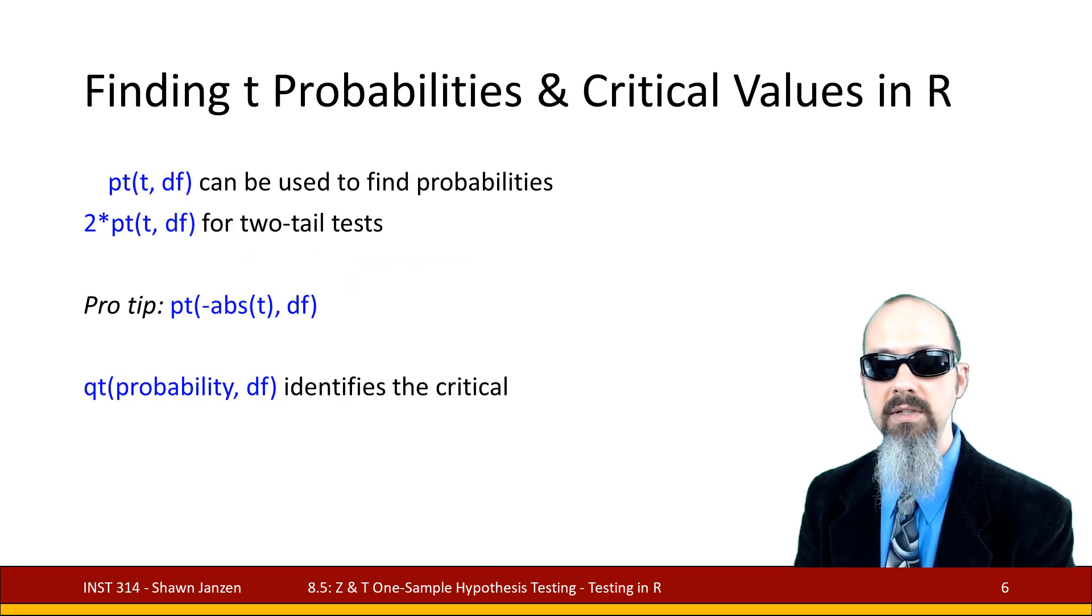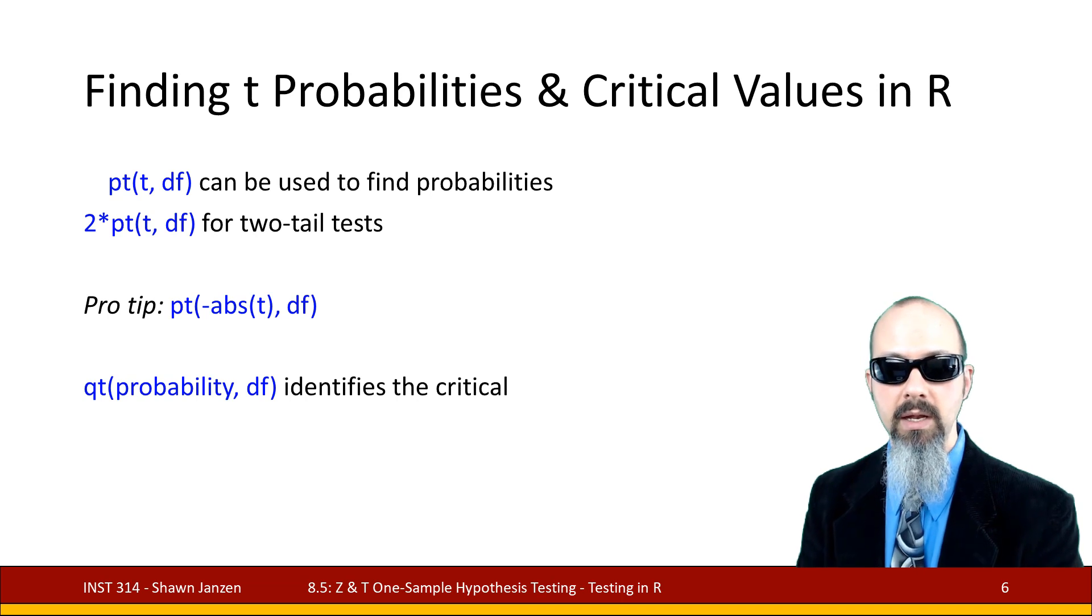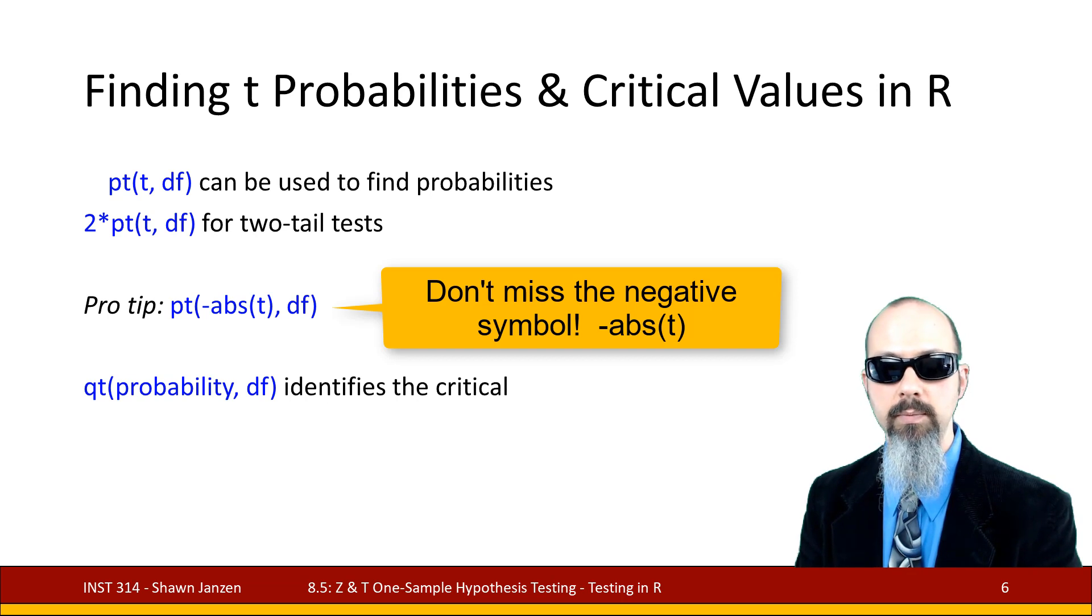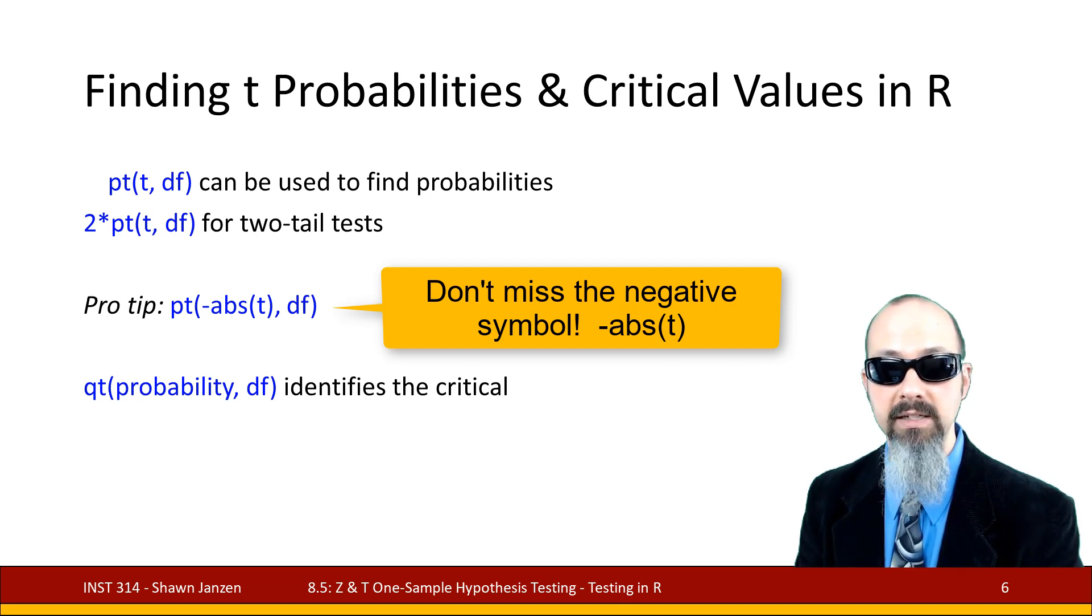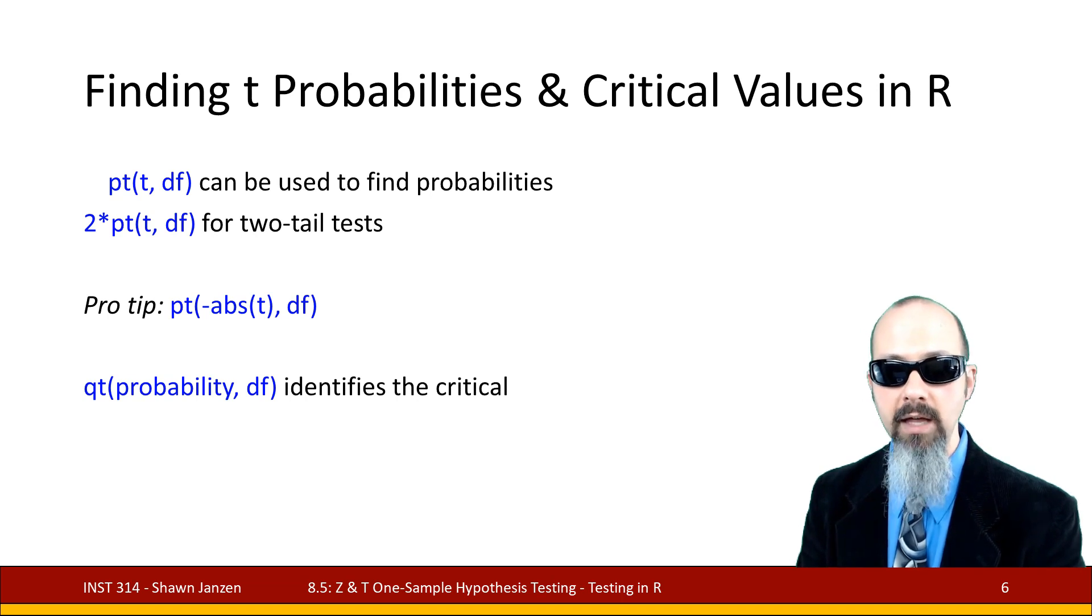If I want to find the probabilities and critical values, we can use the function pt with the t-score comma the degrees of freedom to find out the probability. And we're going to do 2 times pt to get a two-tailed test p-value. Just a pro tip: instead of doing that 2 times, what we can also do is pt in parentheses, put absolute value of t comma degrees of freedom, and we're always going to get positive probability results. And if we want to get the critical value, we can flip it and instead do qt. In qt, instead of putting the t-score, we put in the probability of that t-score we're looking for, comma the degrees of freedom, and it will generate the critical value.